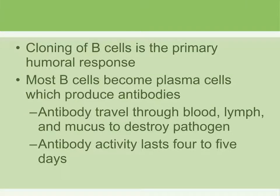The cloning of B cells to create antibodies is the primary humoral response. Most B cells become plasma cells, which then produce the antibodies. The antibodies travel through body fluids like blood, lymph, and mucus, seeking out antigens with a matching binding site, and then they do various things to destroy the antigen or pathogen.